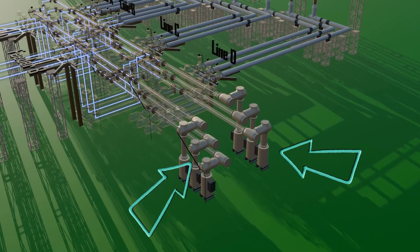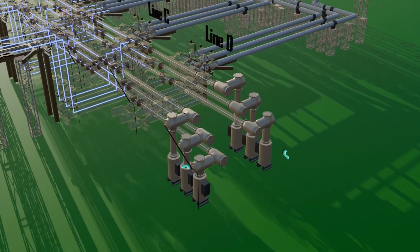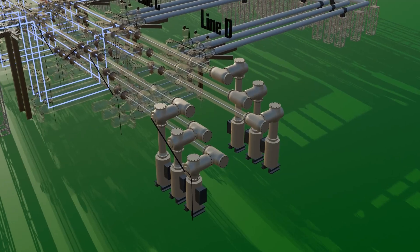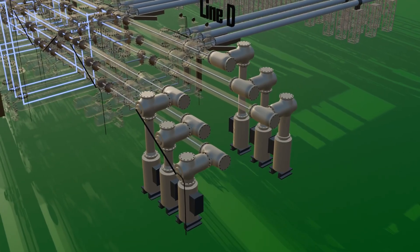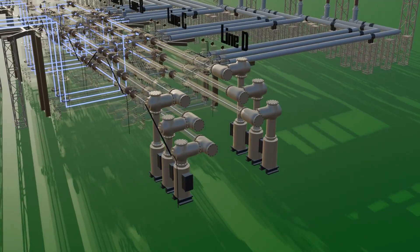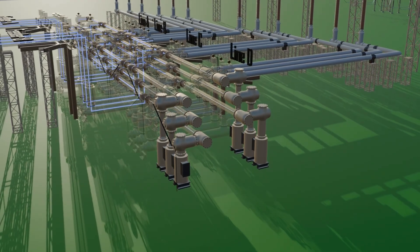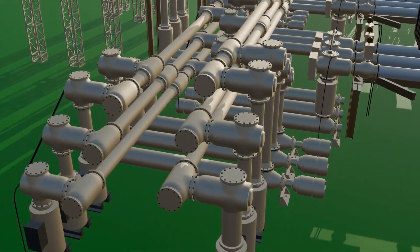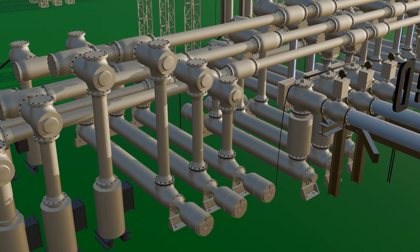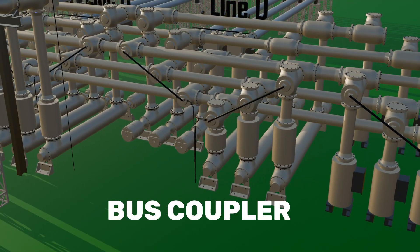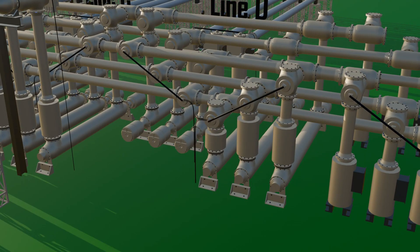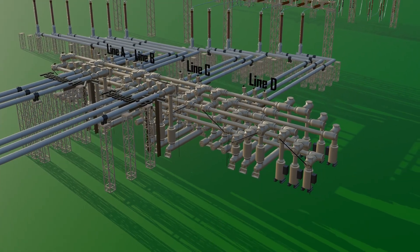For systems of 132 kV or below, a voltage transformer is used instead. Both CVT and VT are connected in parallel with the line. Sometimes both buses need to be connected together to share or balance the load. For this purpose, a bus coupler is used. The bus coupler also contains a circuit breaker, CT, and isolators in its arrangement. This is how a switching substation manages load.